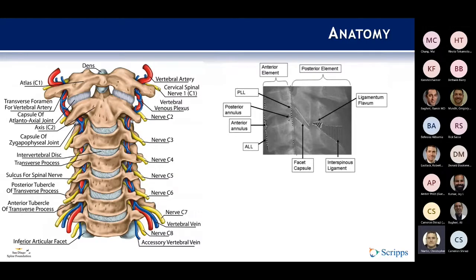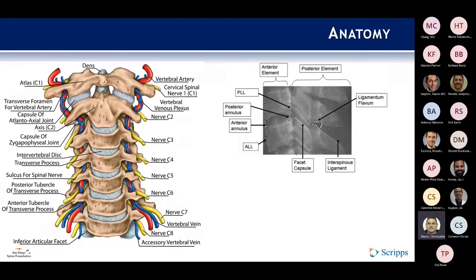There are multiple ways to divide the subaxial spine — a two-column theory and a three-column theory. Holsworth divided the C-spine into two columns: anterior and posterior. The anterior column includes the ALL, the annulus, the vertebral bodies, the transverse processes, the PLL, and the uncovertebral joints. The posterior column includes the facets, the ligamentum flavum, the pedicles, the lamina, the spinous processes, and the posterior ligamentous structures. The anterior column involves the majority of the discoligamentous complex (DLC), and the posterior column involves the facet joints and posterior ligamentous structures.